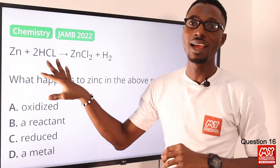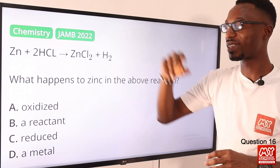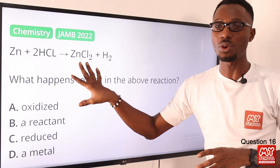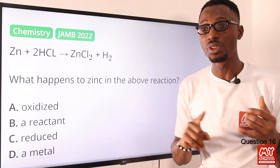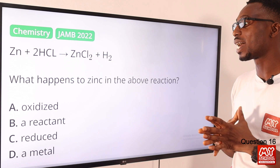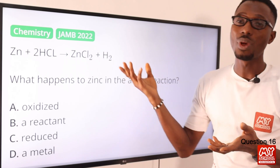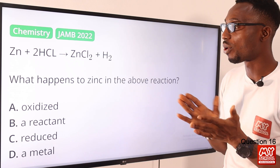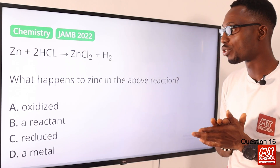Question sixteen: what happens to zinc in the above reaction? We have zinc and hydrochloric acid — a displacement reaction. Hydrogen is displaced, liberating hydrogen gas and forming a zinc salt. In this reaction, zinc is the reducing agent and hydrochloric acid is the oxidizing agent. Therefore, zinc becomes oxidized and the other becomes reduced. The correct option is option A — zinc becomes oxidized because it is the reducing agent.